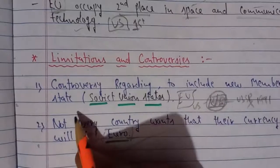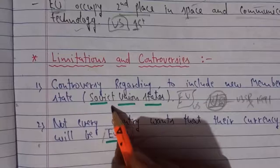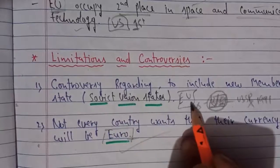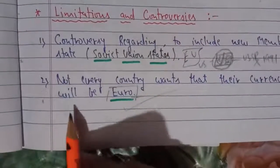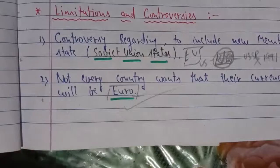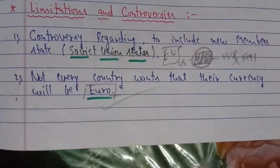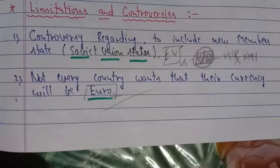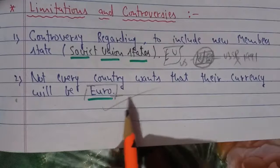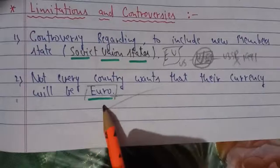First, there was controversy about including new member states after the disintegration of the USSR — particularly whether the Baltic states that broke away from the Soviet Union should be included in the EU. They were eventually included, but there was conflict initially. Additionally, not every country wants euro as its currency, contrary to the idea that all EU members follow a common currency.